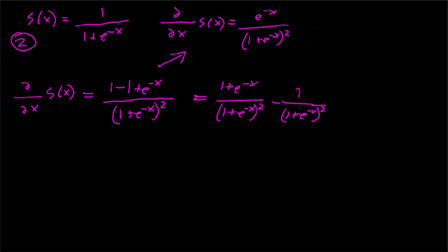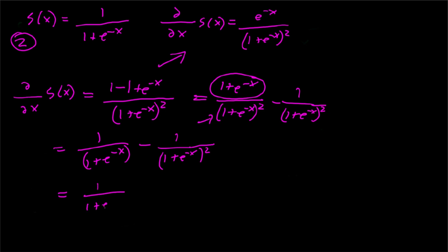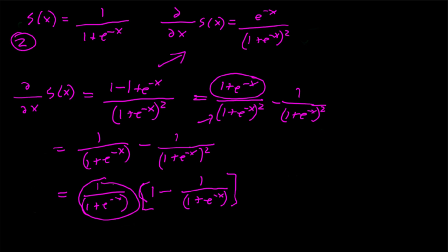Next, we cancel (1 plus e to the negative x) from the numerator and denominator of the first fraction. The numerator cancels to 1 and one factor cancels from the denominator, leaving 1 over (1 plus e to the negative x). So we have 1 over (1 plus e to the negative x) minus 1 over (1 plus e to the negative x) squared. Factoring out 1 over (1 plus e to the negative x) from both terms, using the FOIL method to verify, gives us 1 over (1 plus e to the negative x) times (1 minus 1 over (1 plus e to the negative x)).